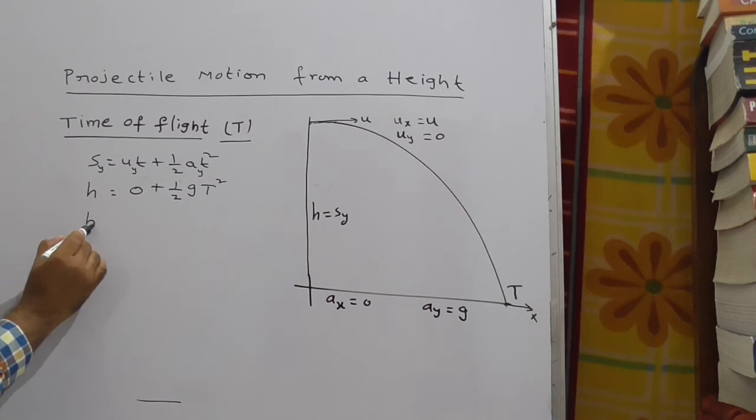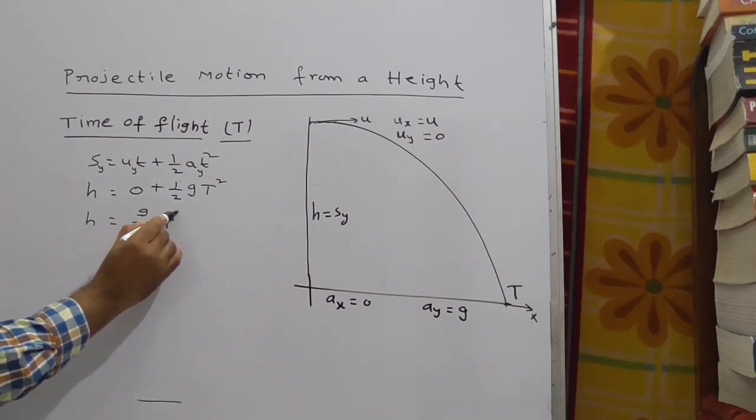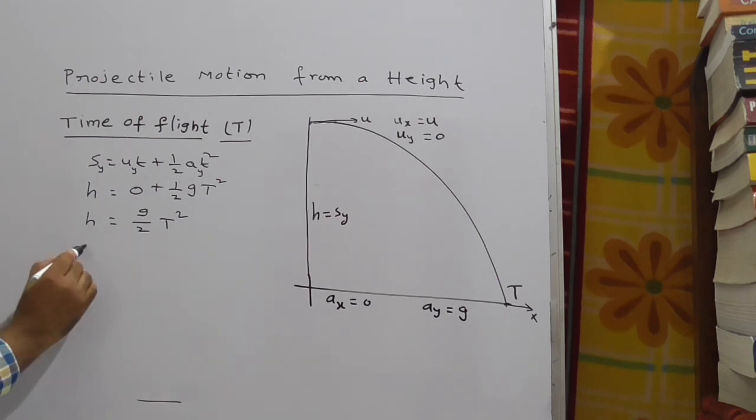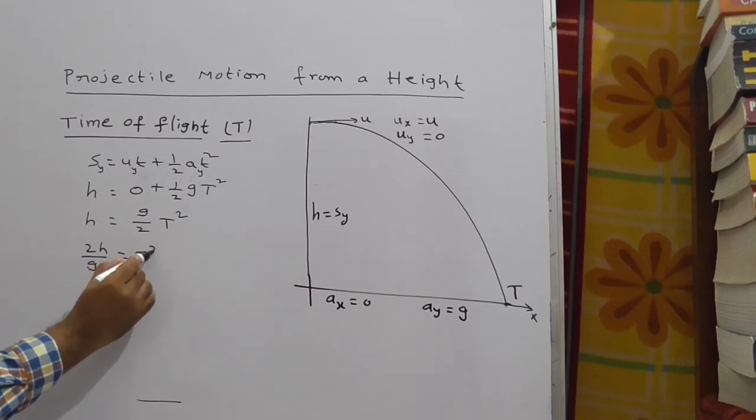Now h is equal to g by 2 T square. Now cross multiply, 2h by g is equal to T square.